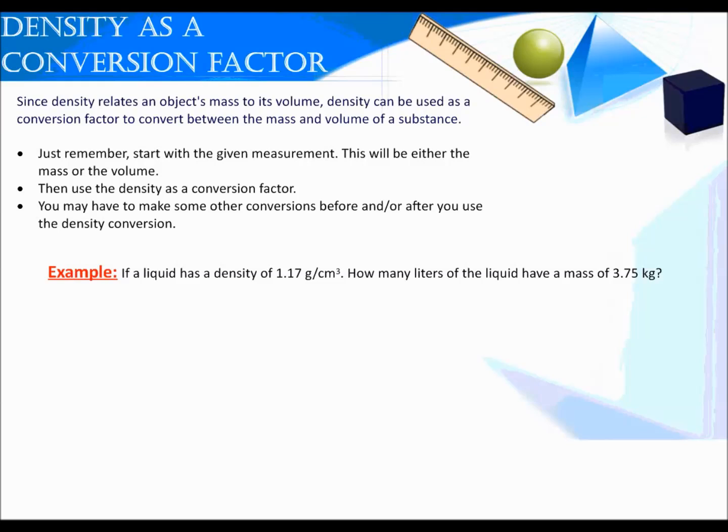Here's our example. If a liquid has a density of 1.17 grams per cubic centimeter, how many liters of the liquid have a mass of 3.75 kilograms? We know we're going to use density as a conversion factor, so I always like to label everything in the problem. The 3.75 kilograms has to be my given, and it's asking us to solve for how many liters, so I know that liters is my unknown. I'm starting here with 3.75 kilograms, and I need to use a conversion factor that is in grams. I can't use it right away. I need to go from kilograms to grams first. For every 1 kilogram, there are 1,000 grams. Kilograms go on the bottom so that those units can cancel.